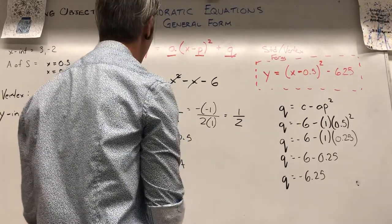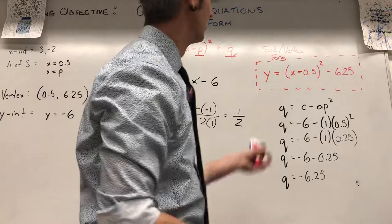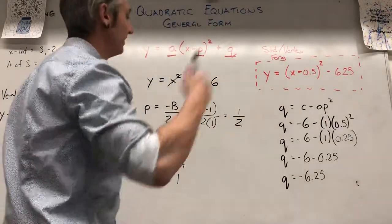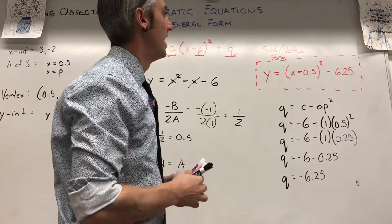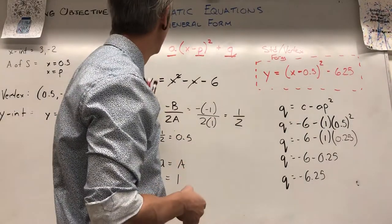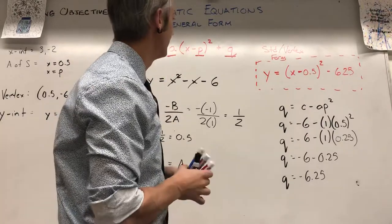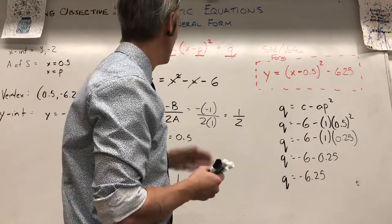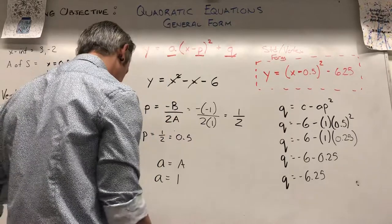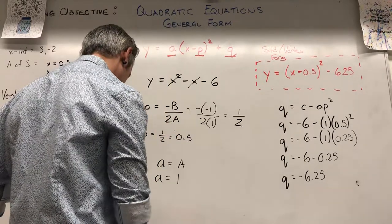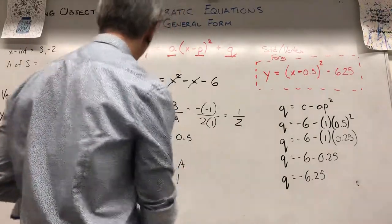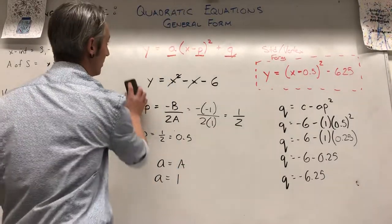That's why we like vertex form — it's just easier to work with. The next step is to use the completing the square method to go from general form to vertex form, because sometimes it won't be as straightforward as this. But let's do one more example to show how it works.